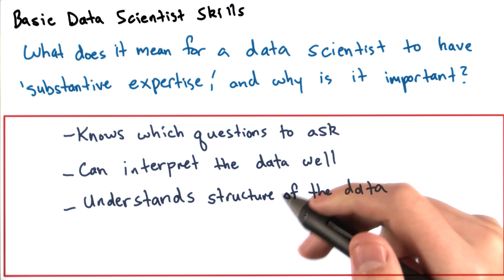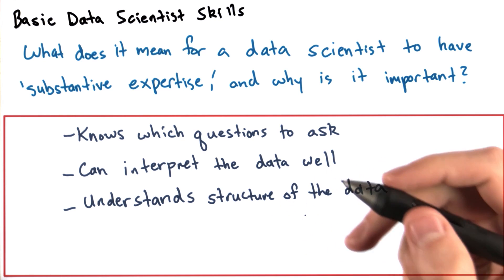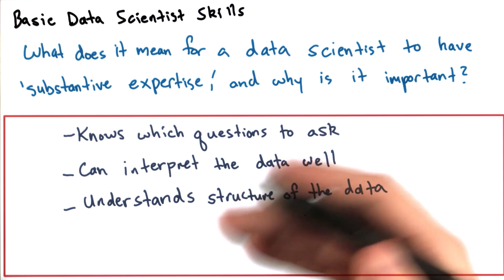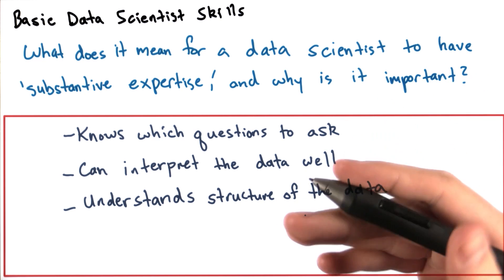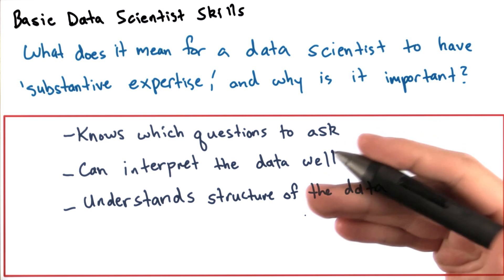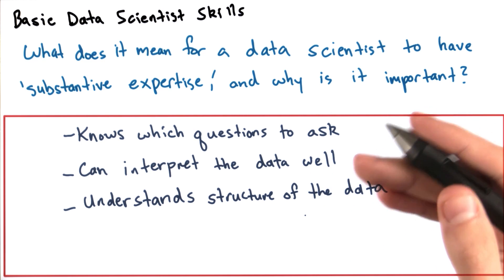You can imagine that a data scientist needs to know about the problem they're solving. For example, if you're solving an online advertising problem, you want to make sure you understand what types of people are coming to your website, how they're interacting with the website, and what different data means.